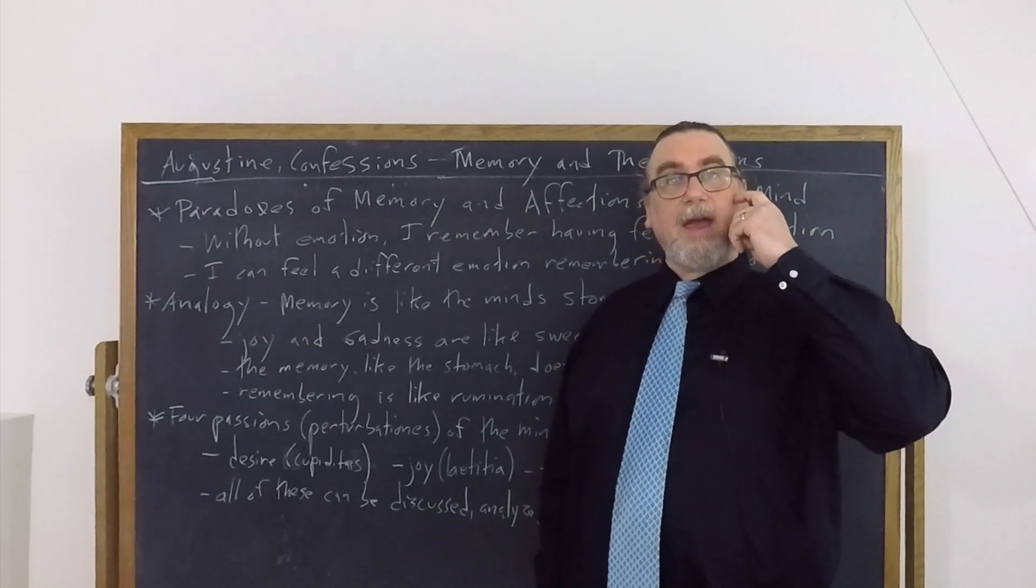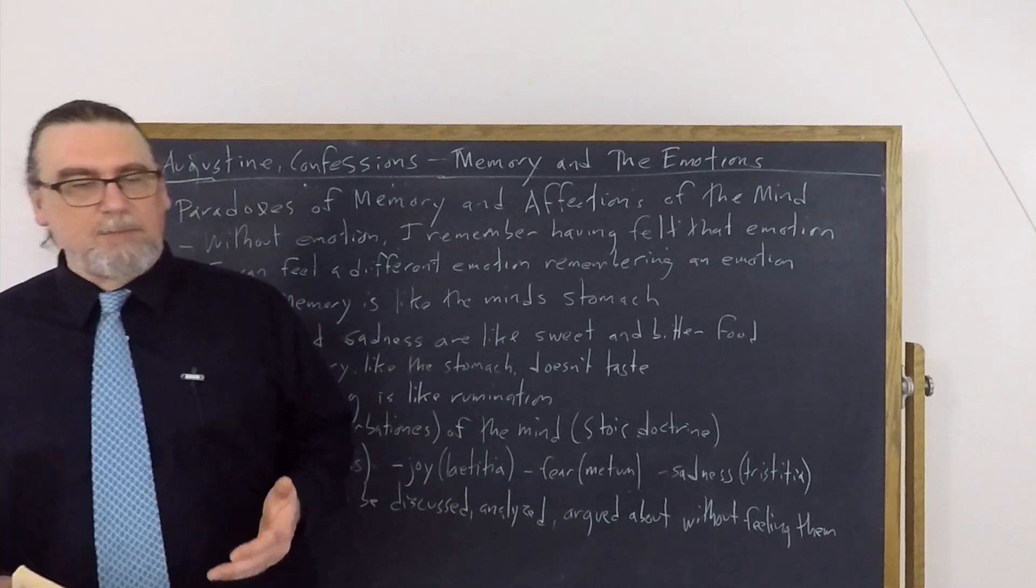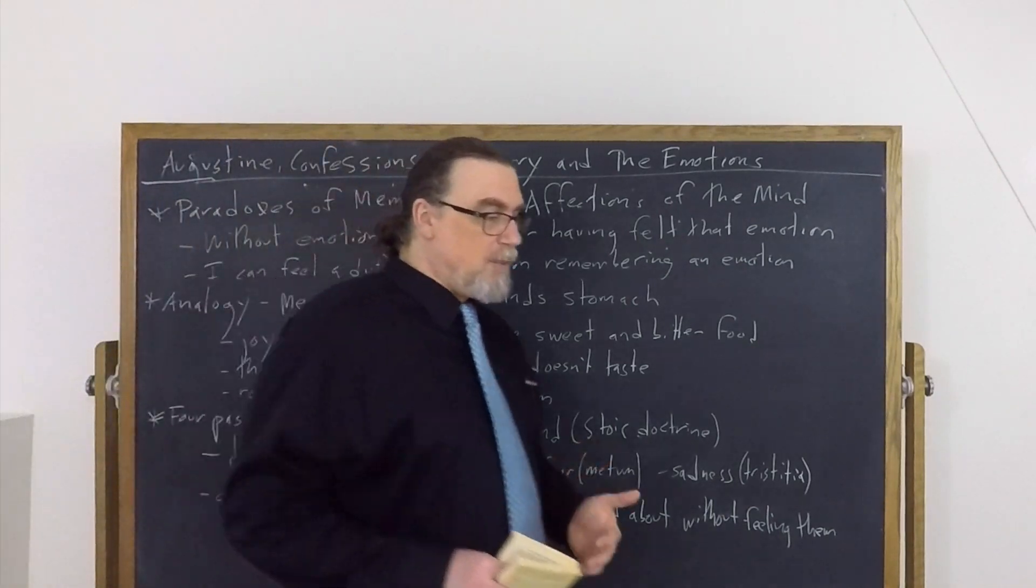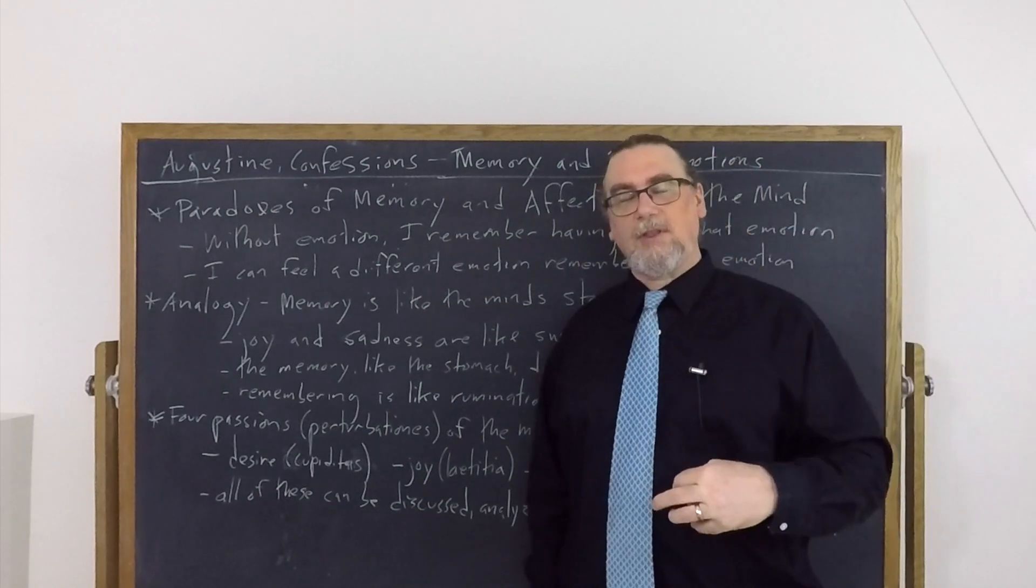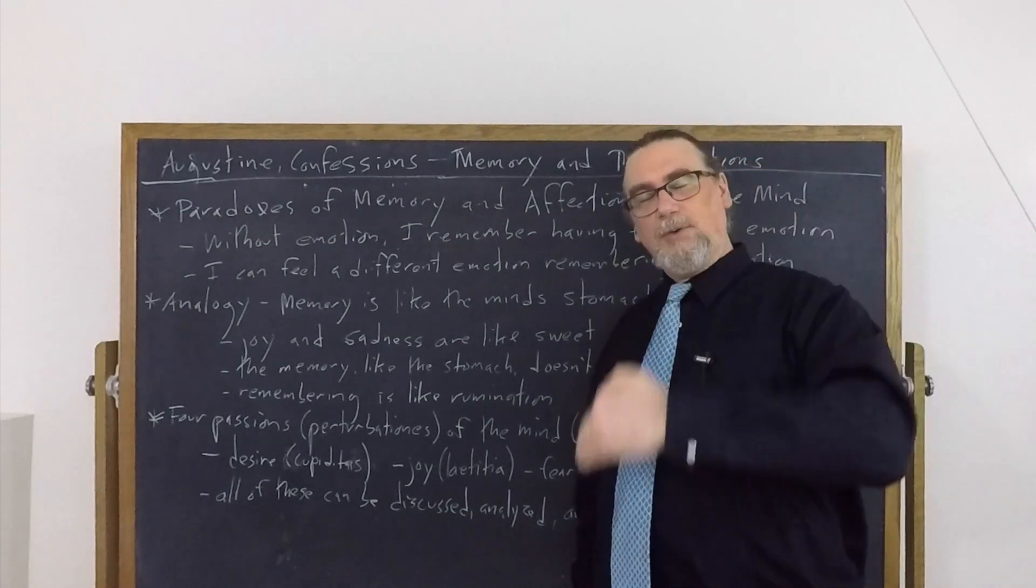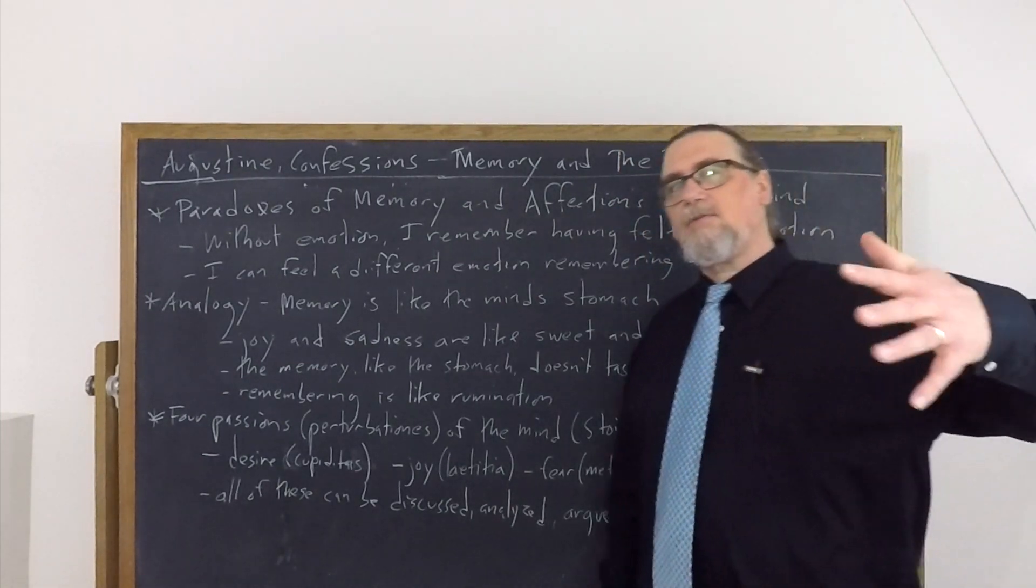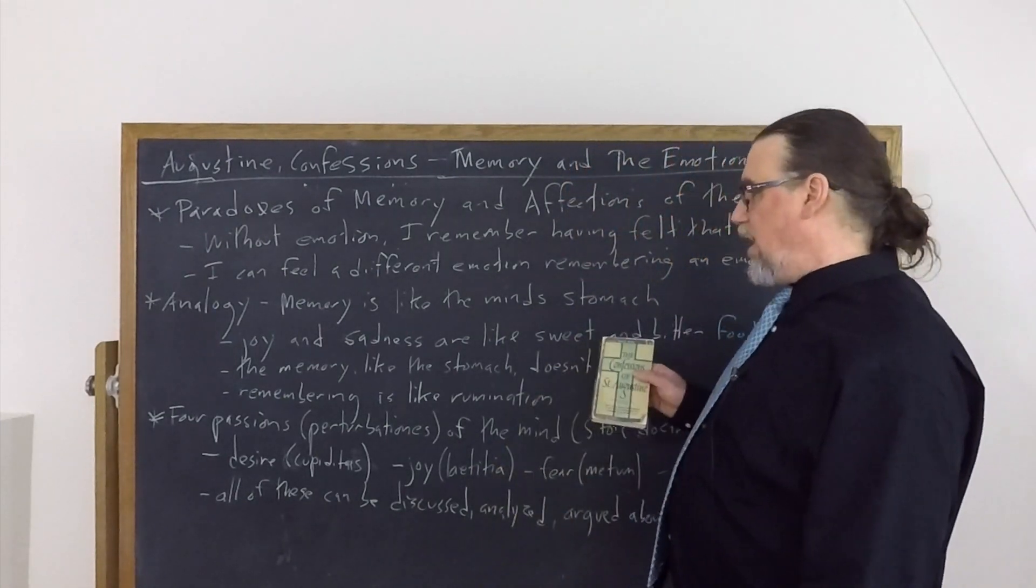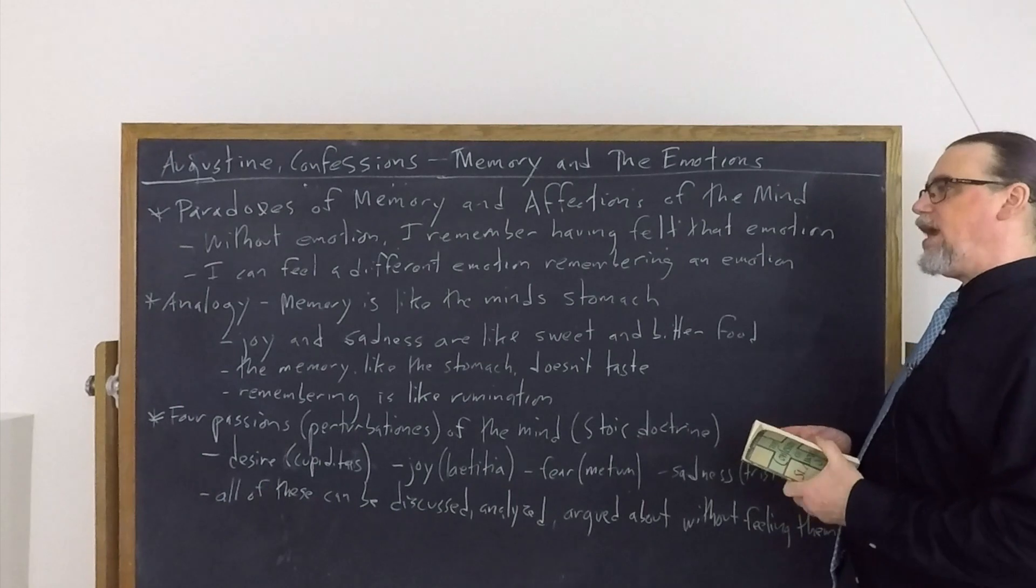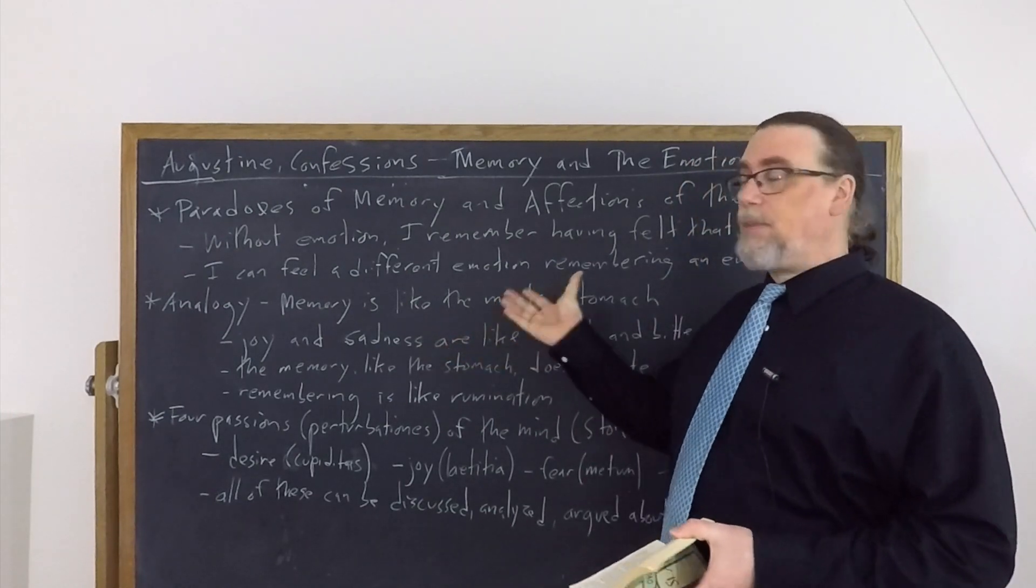And this notion of remembering or recalling recollection being like ruminating is actually going to be quite an important metaphor for understanding texts from Augustine onward. Now, when we say ruminating, we're talking about something that we human beings don't typically do with our food. Ruminating creatures are those that have multiple stomachs. So the food gets chewed, it goes down into the first stomach, and then it gets spit back up into the mouth, and then it's chewed some more, and then it goes into the next stomach. Think about cows, for example, or deer. Those are ruminating creatures. So the act of recollection is like rumination. It can bring the thing back up, but it's not coming back up in exactly the same state. And we can either feel nothing about it or we can feel perhaps even an opposite emotion.